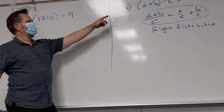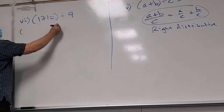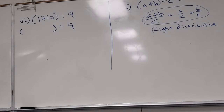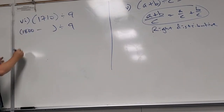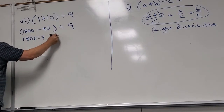You can use addition or subtraction. What number is 1710 close to that nine goes into easily? 1800. How far off is 1800 from 1710? Ninety. So: 1800 divided by nine minus ninety divided by nine. Nine goes into 1800 — nine goes into eighteen twice with two zeros, that's two hundred. Nine goes into ninety once with one zero, that's ten. So 1710 divided by nine is two hundred minus ten, which is one hundred ninety.